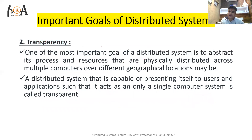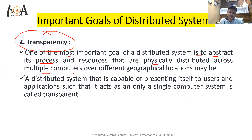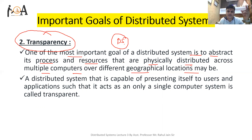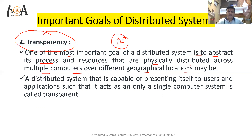The second goal of a distributed system is transparency. One of the most important goals is to abstract its processes and resources that are physically distributed across multiple computers over different geographical locations. We know that a distributed system is a collection of a large number of computing devices working as a single machine, but in reality the systems' processes and resources are shared from various different geographical locations.